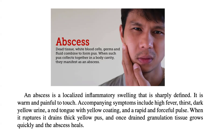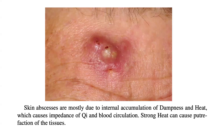When it ruptures, it drains thick yellow pus, and once drained, granulation tissue grows quickly and the abscess heals. Skin abscesses are mostly due to internal accumulation of dampness and heat, which causes impedance of qi and blood circulation. Strong heat can cause putrefaction of the tissues.